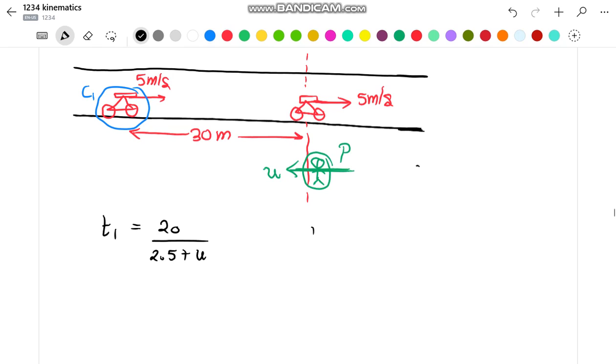Let us now find the time when person P meets cyclist C1. With the help of relative motion, the time is relative distance divided by relative speed, that is 30 divided by 5 plus u. According to the scenario given in the problem, we have to find the value of u for which both these times are equal.